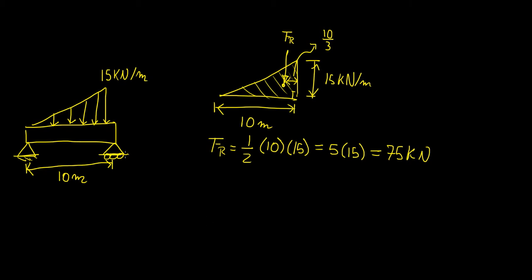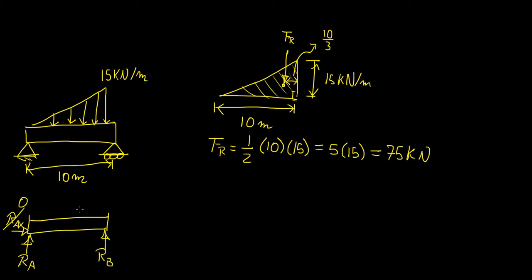Drawing the free body diagram for this structure, we have reaction forces at A and B. Again, the x-direction reaction is zero since there are no external horizontal forces. We have Rb on the right, and the resultant force of 75 kilonewtons acting at 10/3 from the right-hand side, or equivalently 20/3 from the left-hand side.